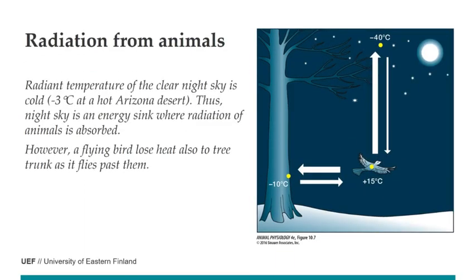Radiation also comes from the animal itself. The radiant temperature of a clear sky, even in a hot desert, is about minus three degrees Celsius, making the night sky a large energy sink that absorbs radiation from animals. A bird releases radiation that is absorbed by the sky, and the radiation from a passing bird also reaches nearby trees, though this would not increase the temperature of the tree significantly.